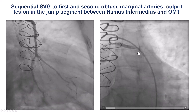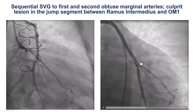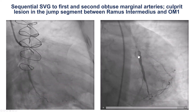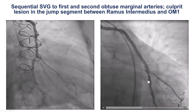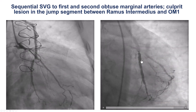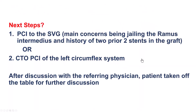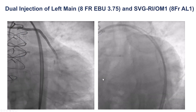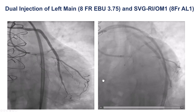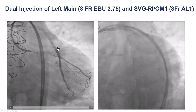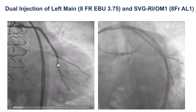The concern with performing PCI of this SVG lesion was that it could potentially compromise flow into the RAMUS branch. There was a discussion with the referring physician as well as the patient. The patient was taken off the table, and eventually a decision was made that a re-canalization attempt would be made for the native coronary artery. If it failed, we would try to extend the SVG.